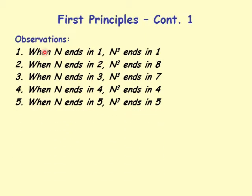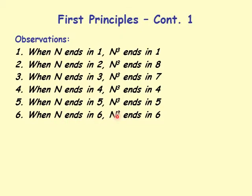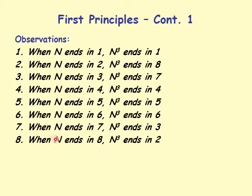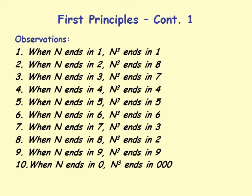To summarize: when n ends in 1, cube ends in 1; ends in 2, cube ends in 8; ends in 3, cube ends in 7; ends in 4, cube ends in 4; ends in 5, cube ends in 5. When n ends in 6, n cubed ends in 6. When n ends in 7, n cubed ends in 3. When n ends in 8, n cubed ends in 2. When n ends in 9, n cubed ends in 9. When n ends in 0, n cubed ends in 3 zeros.